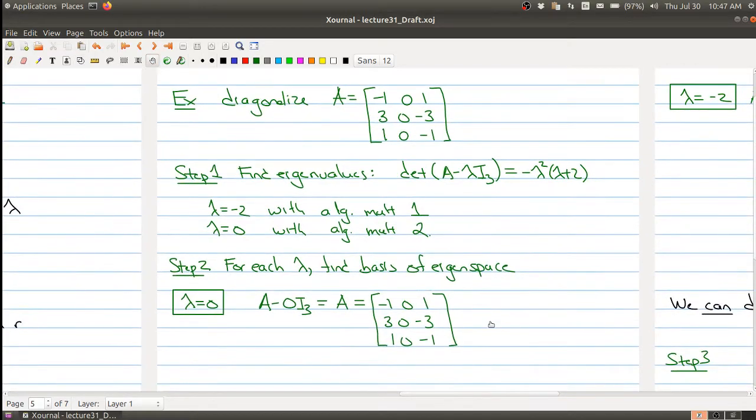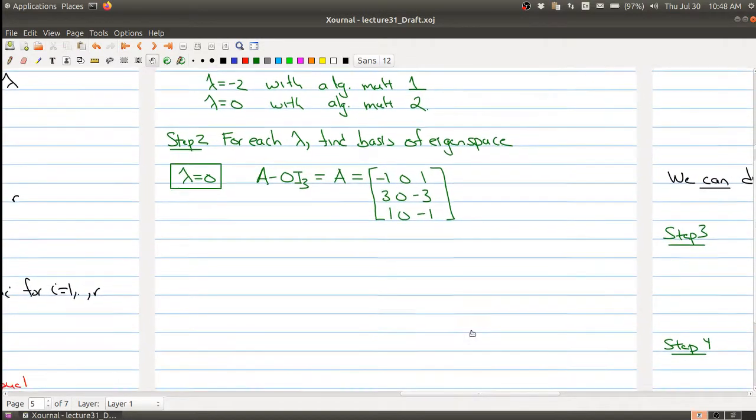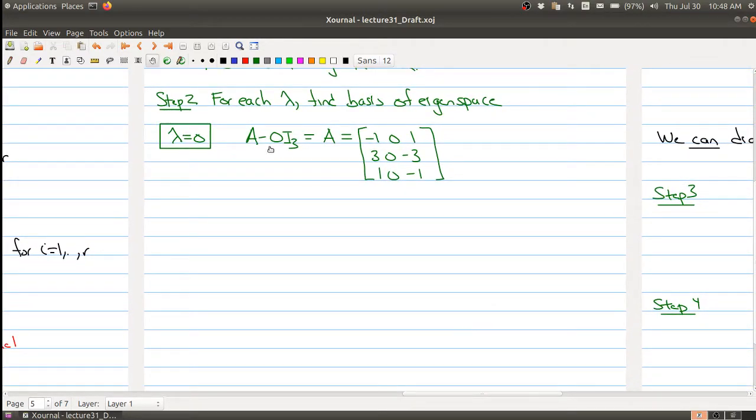We know the algebraic multiplicities. Now we need to find the basis for the eigenspaces for each of these and make sure that these eigenspaces have the correct dimension. We'll start with 0 first. We're looking at A minus 0 I3, and because you're taking 0 minus the identity matrix, we're just getting back the matrix A itself.